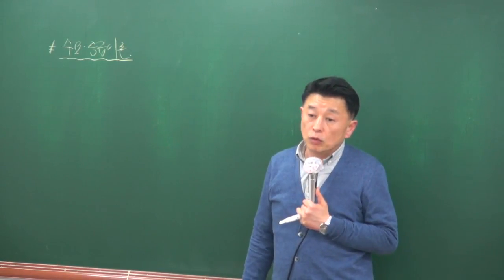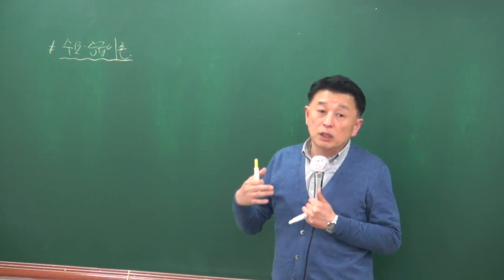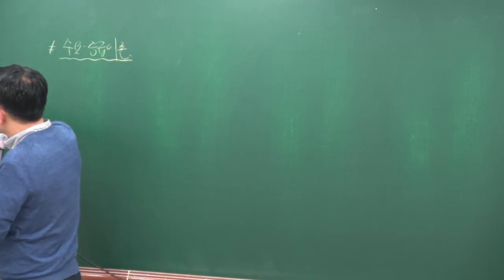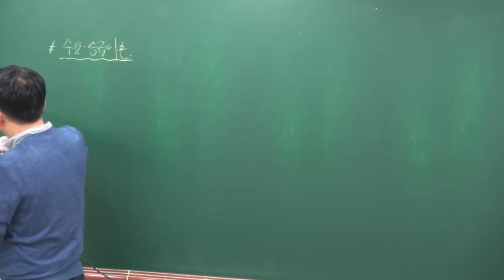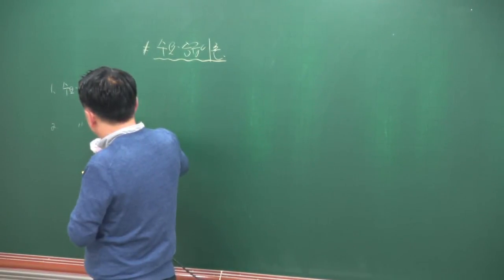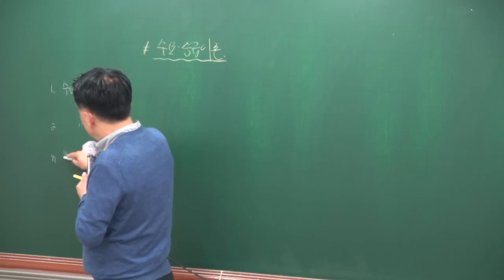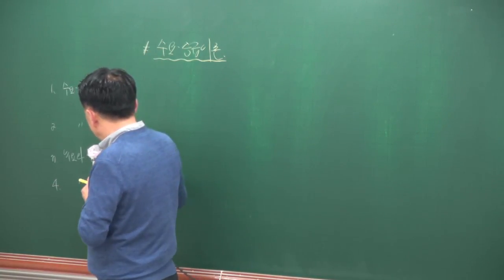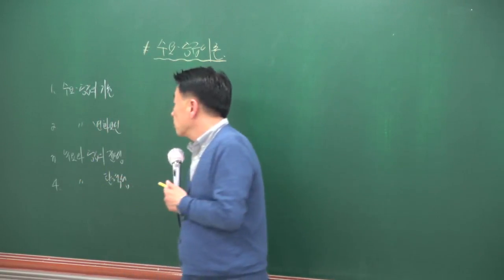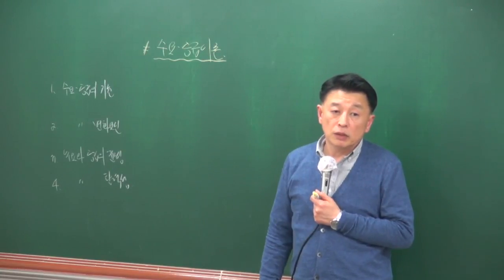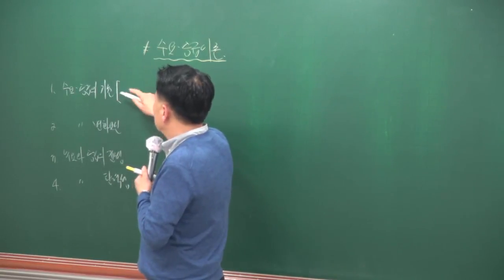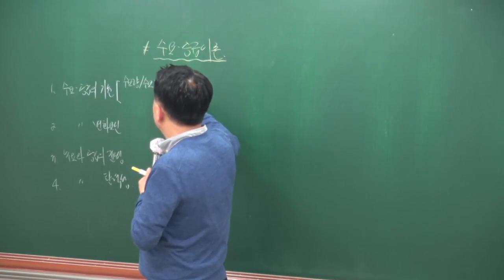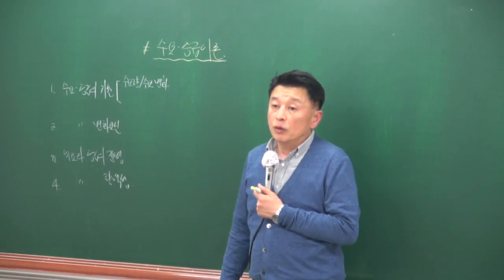경제론은 크게 수요공급이론과 경기변동론 두 가지로 나눠집니다. 시험에서는 수요공급이론과 경기변동으로 명시되어 있는데, 네 개 파트에서 약 네 문항이 출제됩니다. 수요공급의 기초에서는 수요공급의 변화가 기초 문제로 출제됩니다.